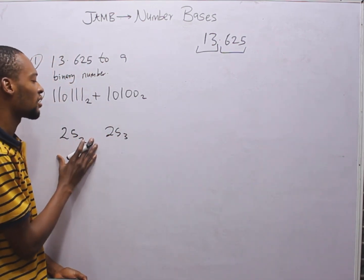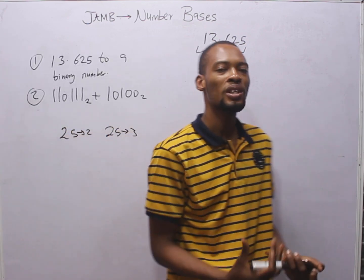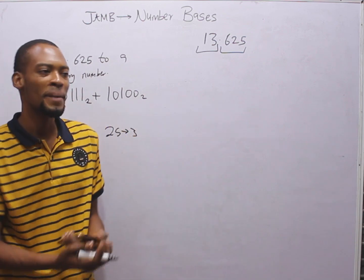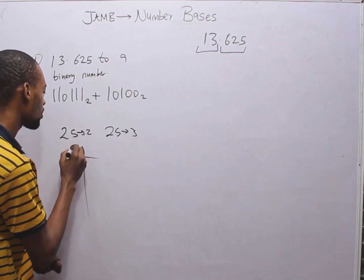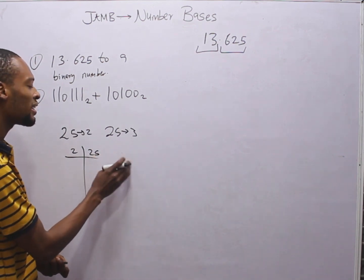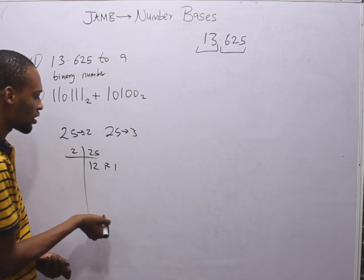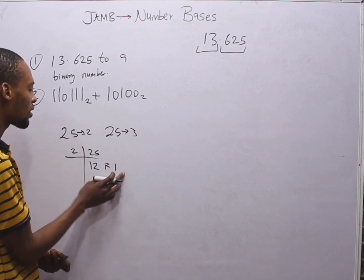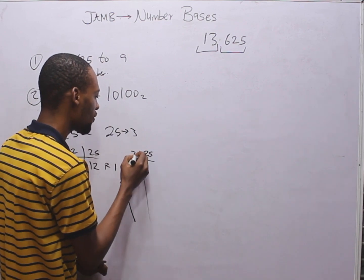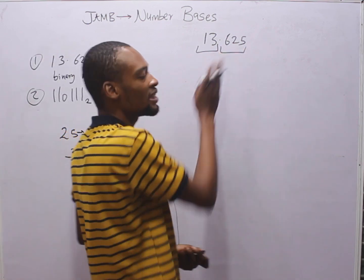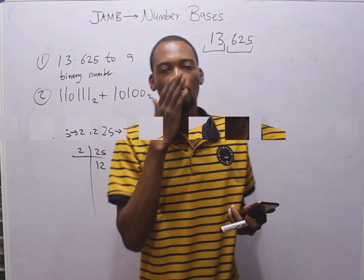To convert a number in base 10 to other bases, you simply divide by the base you are converting to. In this case, to convert 25 base 10 to base 2, you divide 25 by 2 repeatedly and keep the remainders. For example, 25 ÷ 2 = 12 remainder 1 (because 2 × 12 = 24, plus 1). You keep dividing and keep the remainders, then read them from the bottom upward.